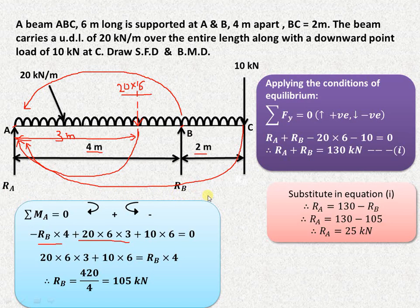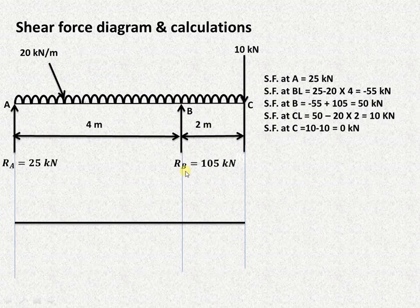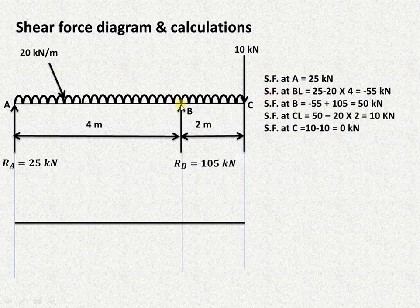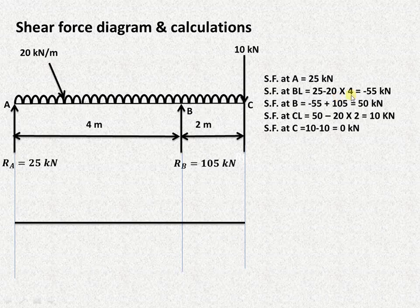The next step is to draw the shear force diagram. The convention is upward forces are positive and downward forces are negative. Shear force at A is 25 kilonewtons (upward, positive). For shear force just to the left of B, we consider only RA upward and the UDL from A to B, so 25 minus 20 into 4 equals 25 minus 80 equal to minus 55 kilonewtons.